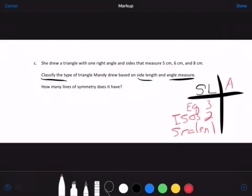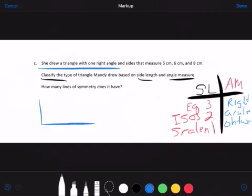So those are for our side length names. Then we also want angle measure names. And our choices there are going to be a right triangle, or we can have an acute triangle, or we can have an obtuse triangle. So let's look again. She drew a triangle with one right angle and sides that measured five centimeters, six centimeters, and then the long side, the hypotenuse, was eight centimeters.